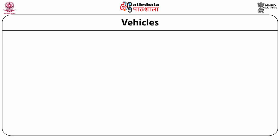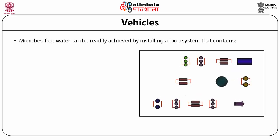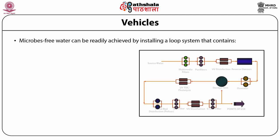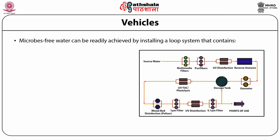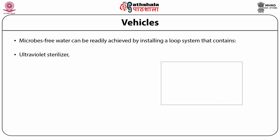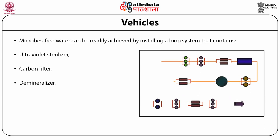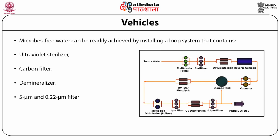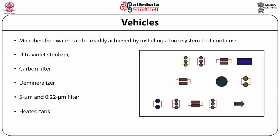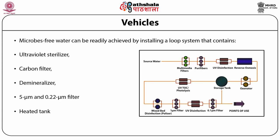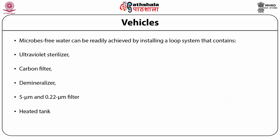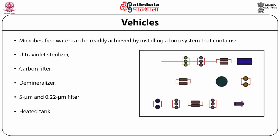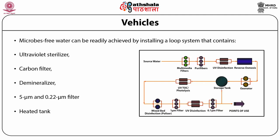Efforts should be made to provide as much microbial-free water as possible. This can be readily achieved by installing a loop system in which the incoming water is first subjected to an ultraviolet sterilizer, then carbon filters, then a demineralizer and a 5-micron filter. After that, it is sent to a heated tank from where it is passed again through an ultraviolet sterilizer and then a 0.22-micron filter before being introduced into the product. Water coming out of the 5-micron filter can be circulated. When using a loop, it is important to establish methods for draining the dead water in the tap and the loop before using it.